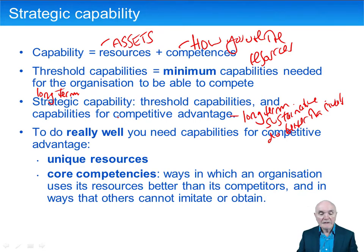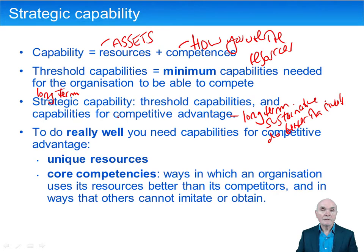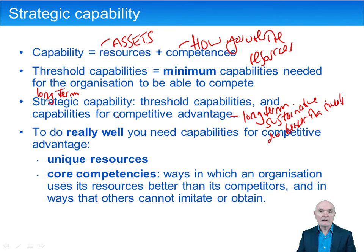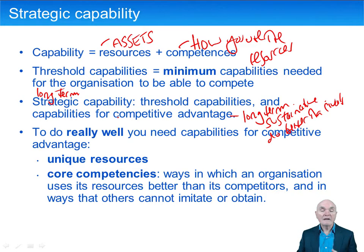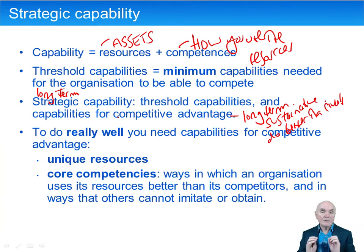To do really well you need capabilities for competitive advantage, and they can be of one of two sorts. First of all, you might have unique resources. From time to time, pharmaceutical companies manage to invent a fantastic new drug — a blockbuster — and for maybe 15 to 20 years they have the patent on making that drug. No one else is allowed to make it. That is certainly a unique resource, and companies which have this unique resource can make fantastic profits.